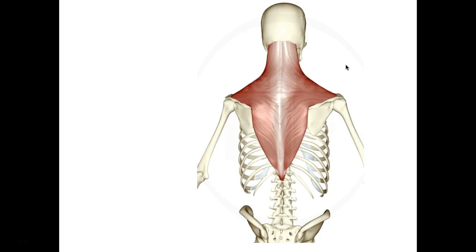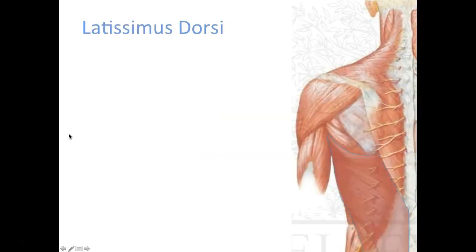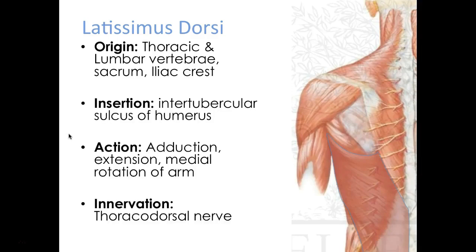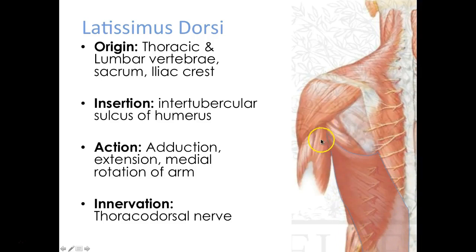Here's that kite-shaped muscle, the trapezius — just wanted to give you another view. Latissimus dorsi is the muscle blinking down here. This is also called the swimmer's muscle. It originates from the thoracic and lumbar vertebrae down to the sacrum, then curves over the iliac crest.